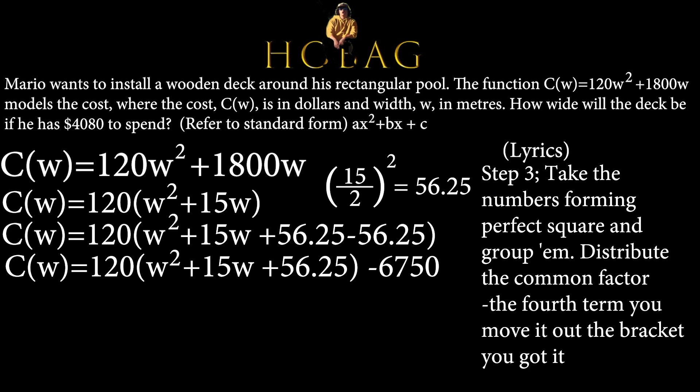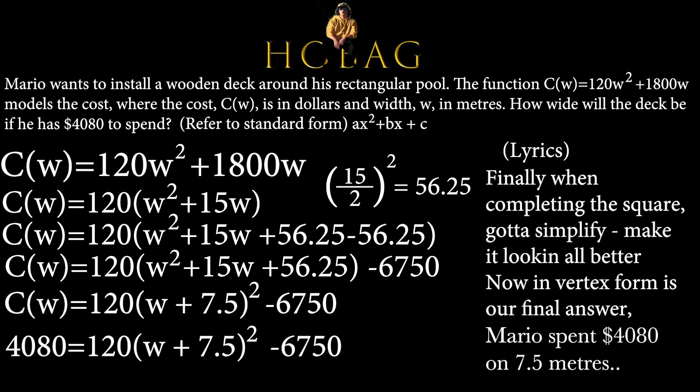Step 3, take the numbers, form a perfect square and group them. Distribute the common factor, the fourth term you move it out the bracket. You got it. Finally, when completing the square, gotta simplify and make it looking all better. Now vertex form is our final answer. Mario spent 4080 on 7.5 meters.